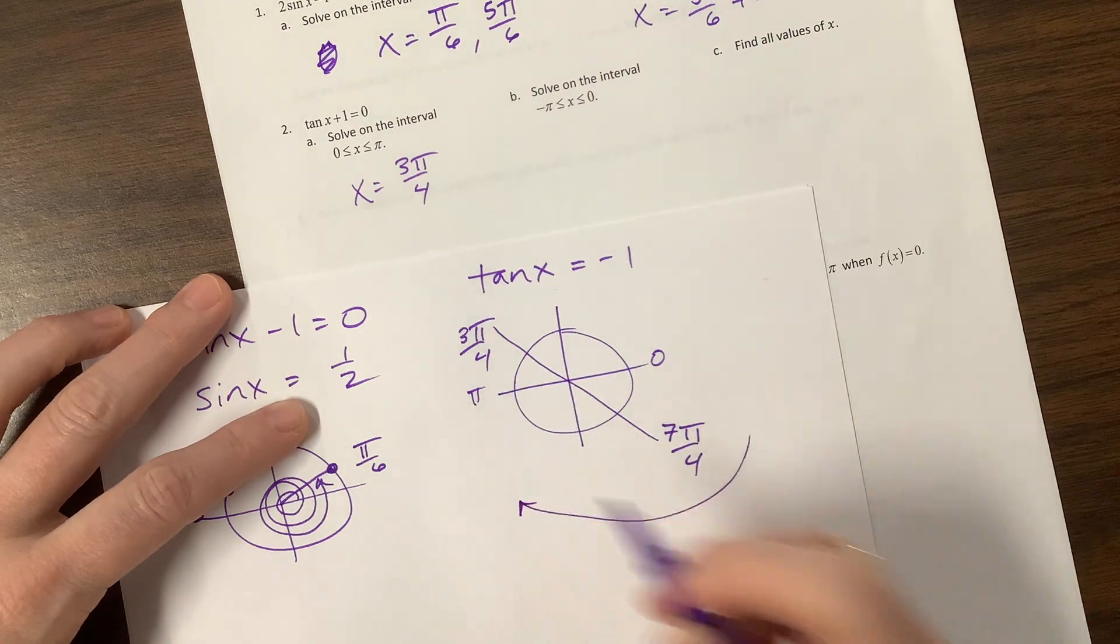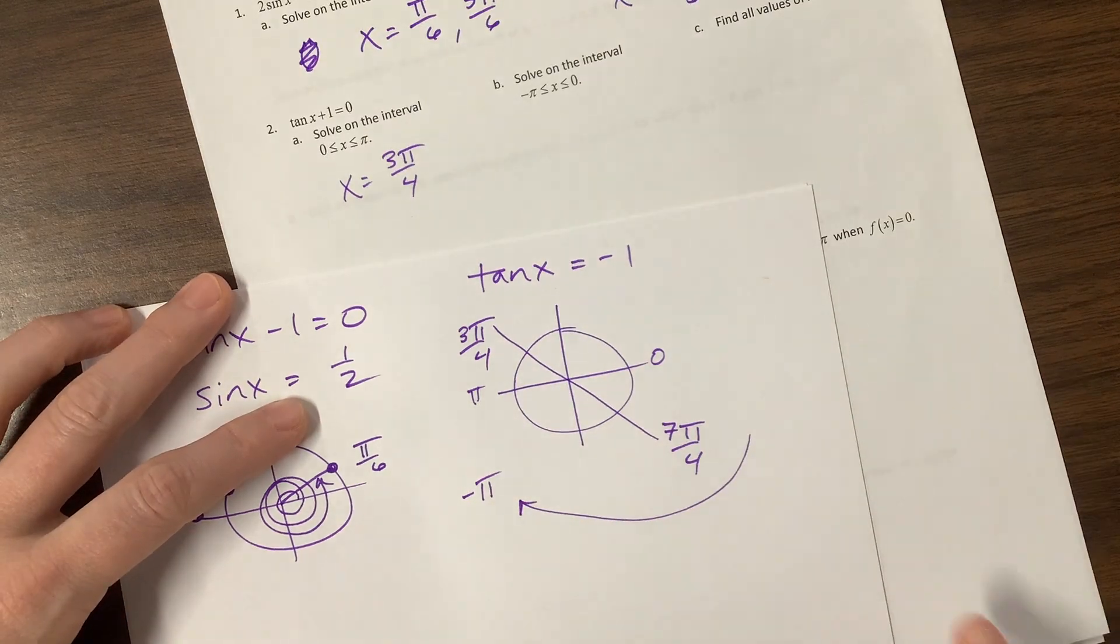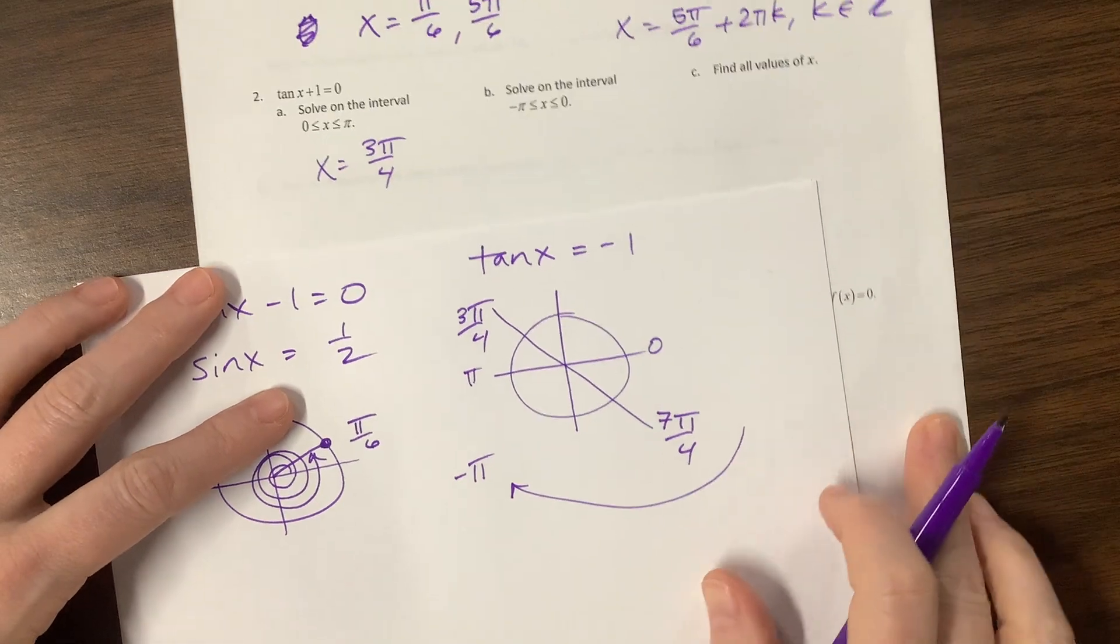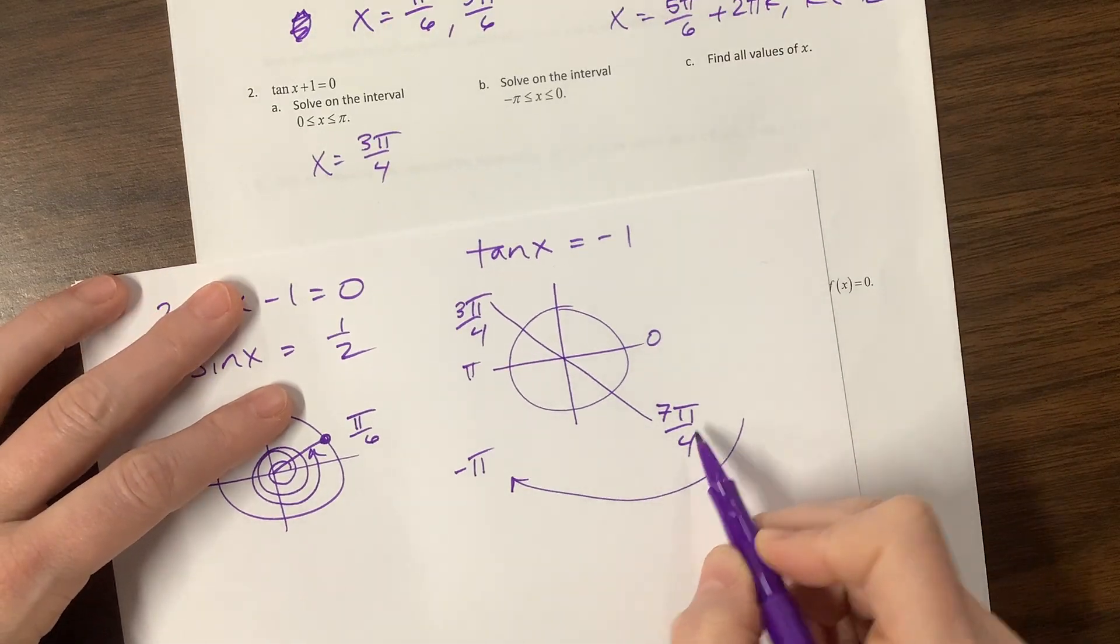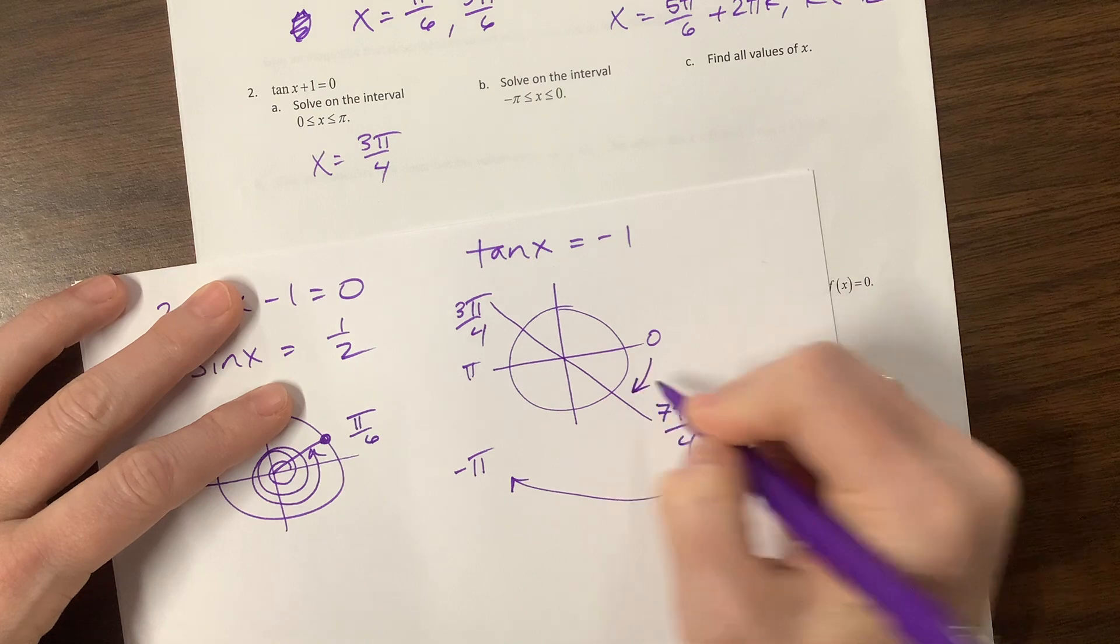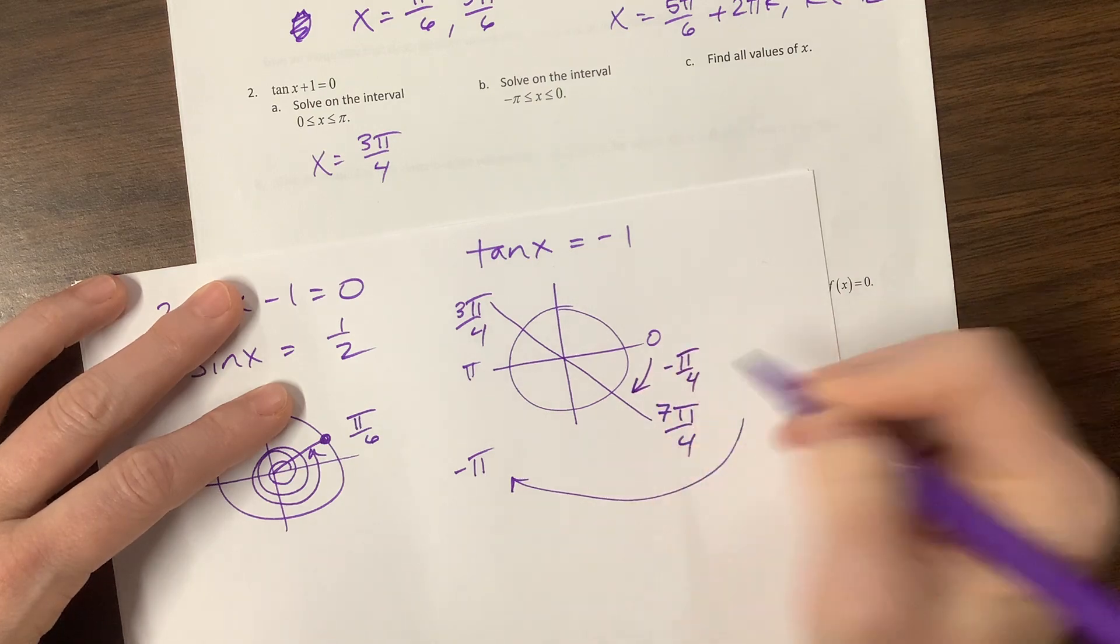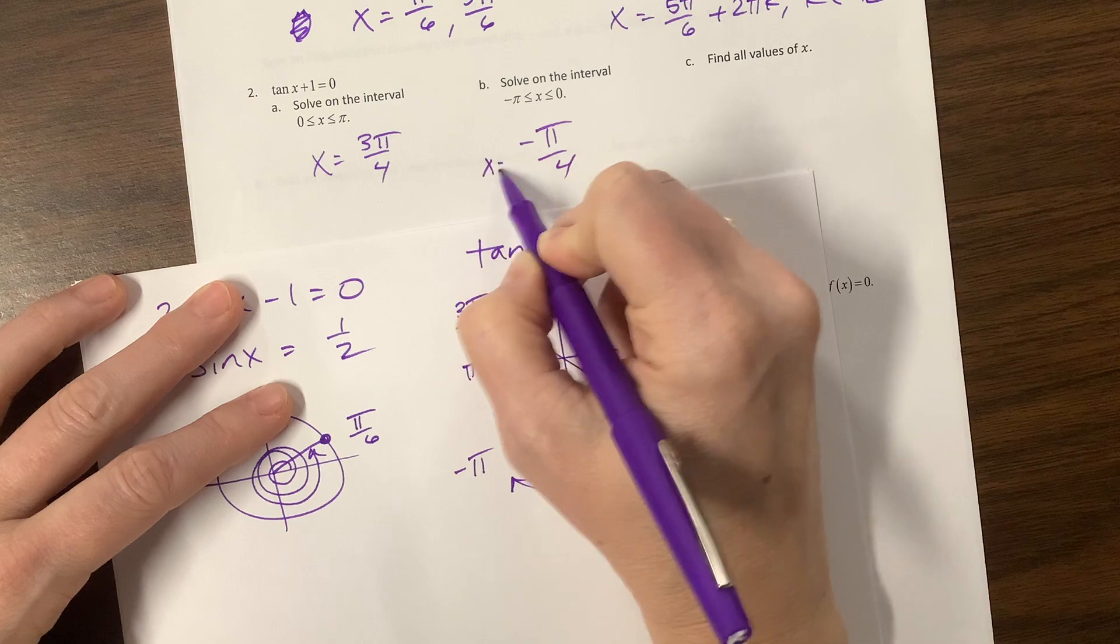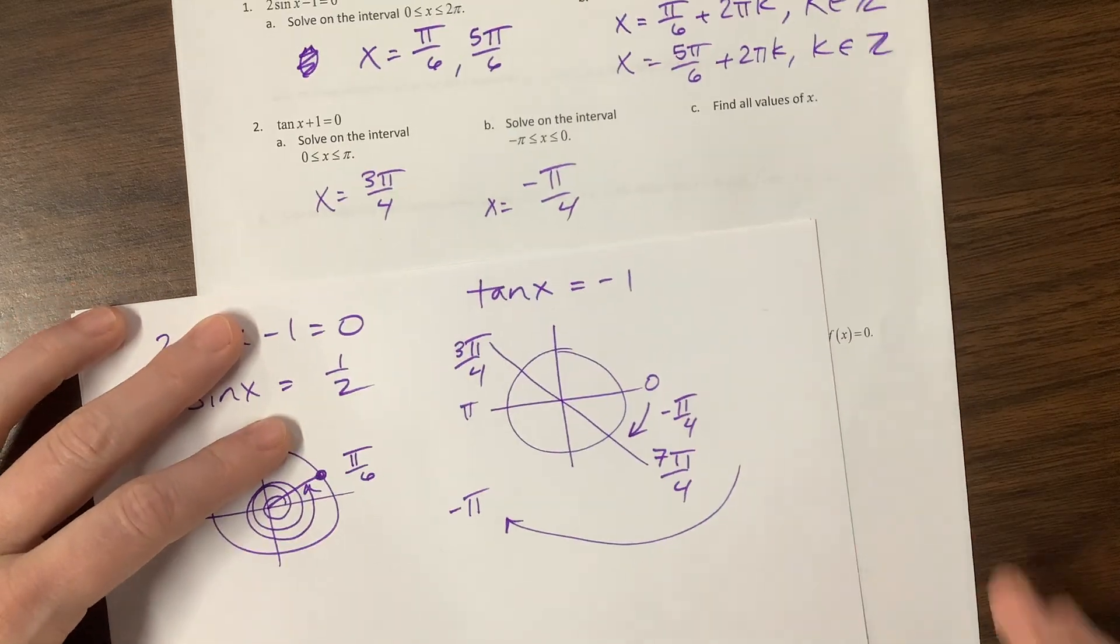Then they say solve on the interval from -π to 0. That means we're coming this way. What that's telling us is we don't want 7π/4, we need to say how did I get here in the negative direction? That's -π/4. So x = -π/4.